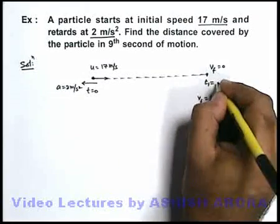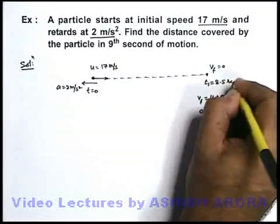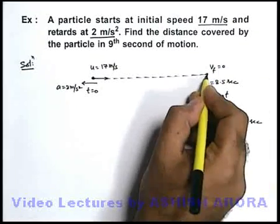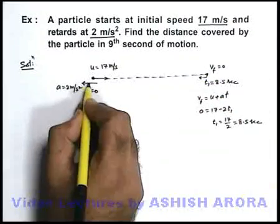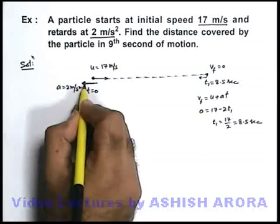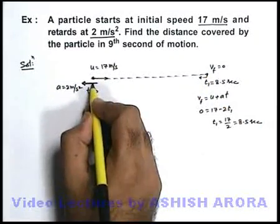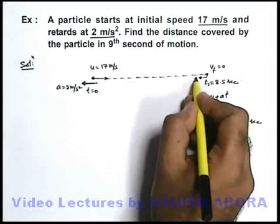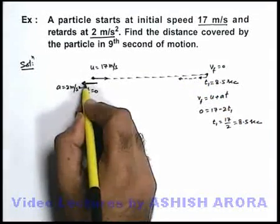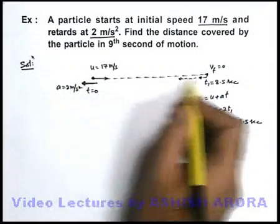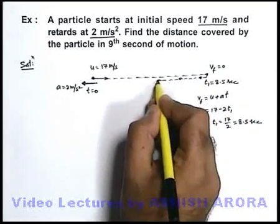So at t₁ equal to 8.5 seconds, it is coming to rest, and then it will return back because acceleration was opposite. So till this point, its velocity is retarded, it will come to rest, and then it returns back due to the continuous action of acceleration. Now it will be in an accelerated motion.